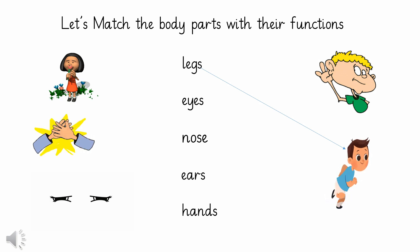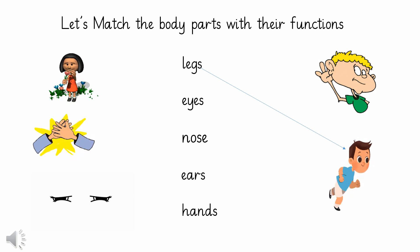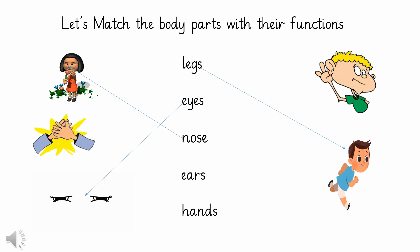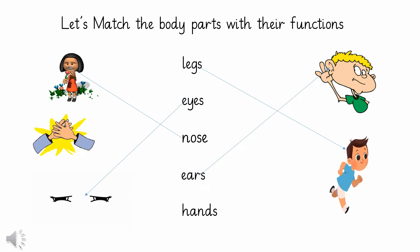What do we do with our eyes? Smelling or seeing? Correct! We see with our eyes. What is the function of our nose? Smelling! Well done! We smell with our nose. Great job! Now let's match the next body part with its function. What do we do with our ears? Fantastic! We hear all sorts of pleasant, sweet sounds and sometimes loud and harsh sounds with our ears.